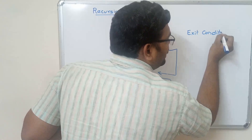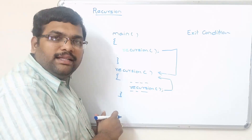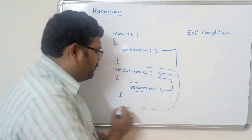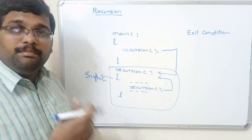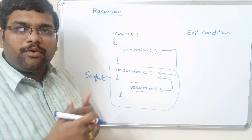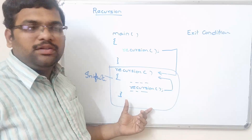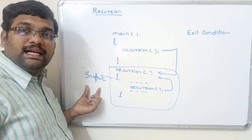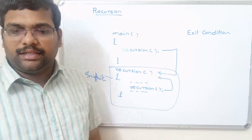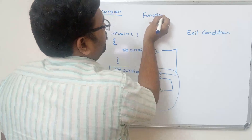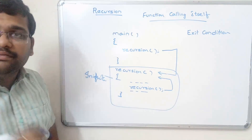We have to take care that in the recursion function there must be an exit condition. If you fail to write the exit condition, this process will execute repeatedly — it will go to infinite times, a never-ending process. So compulsorily we have to write one exit condition in the recursion function. Without this exit condition, the recursion will result in infinite execution.